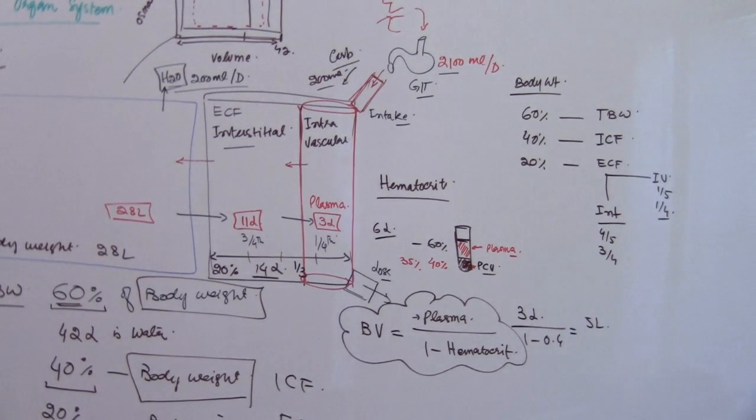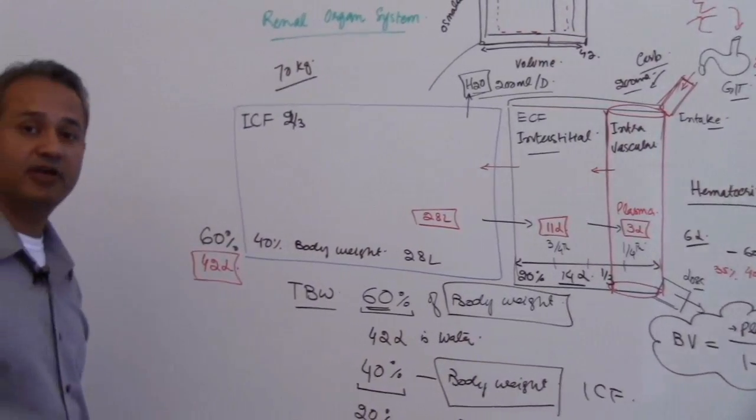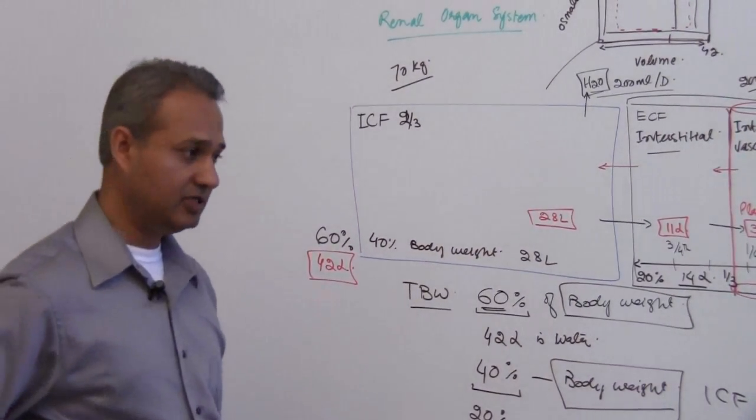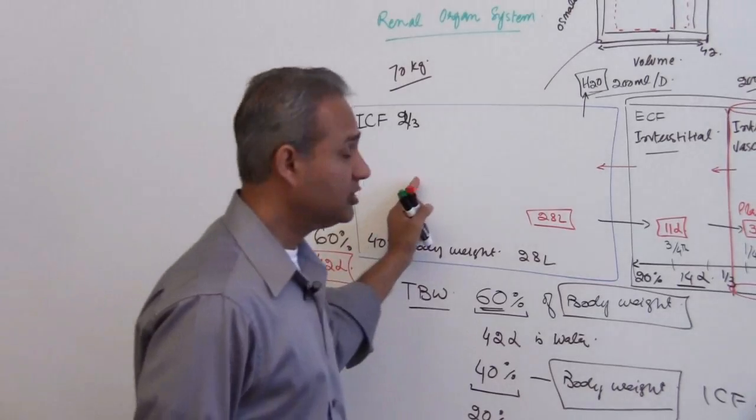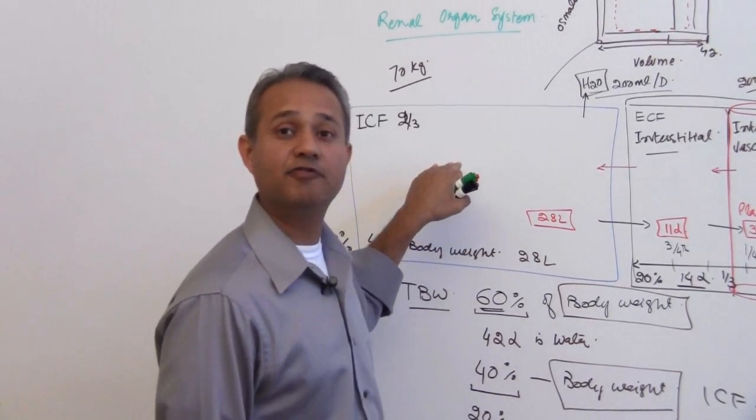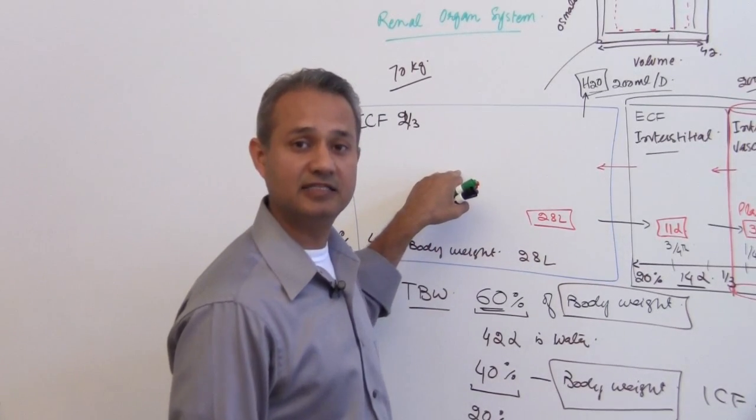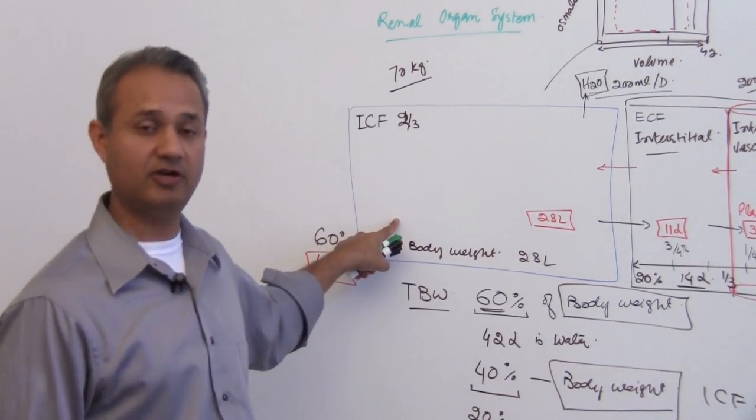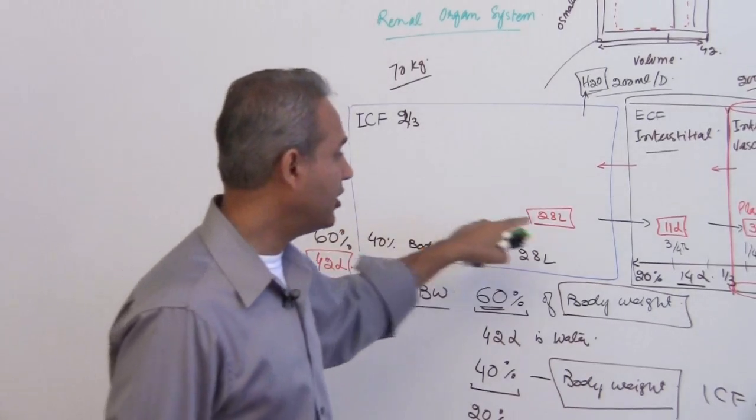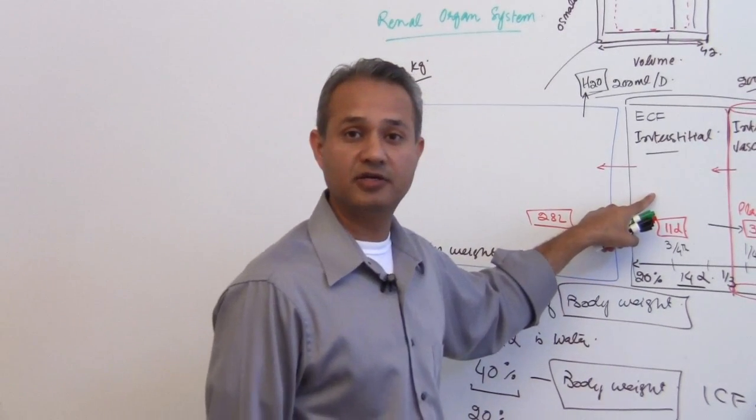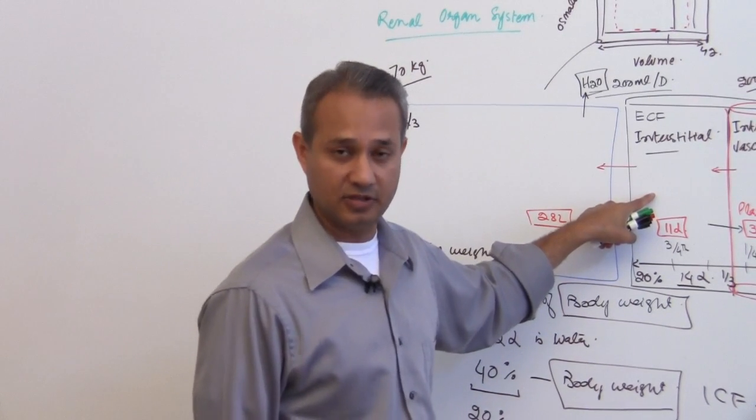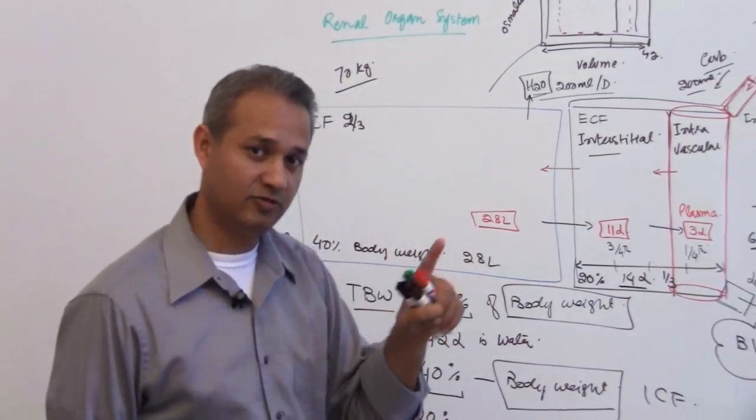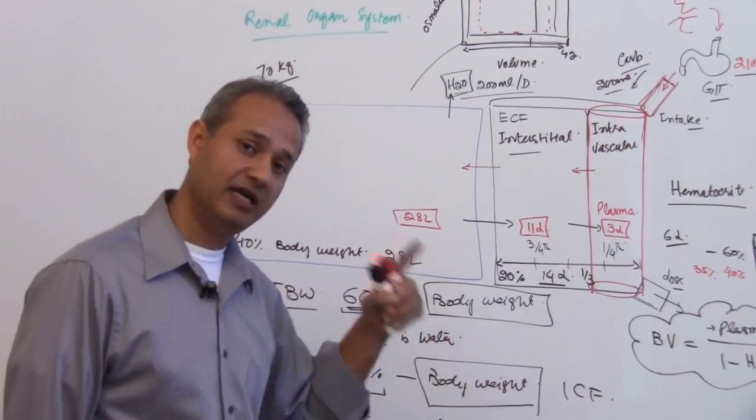So far what we have established is that we have various body compartments. We do not yet know why fluids stay in these compartments. Why do we have 40% staying here, why not 50 here, why not 60% here? Why do we have the remaining 20% here? Remember we're talking about body weights—the 20% of the body weight.